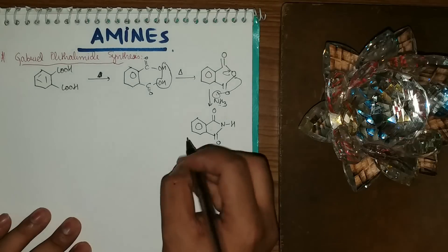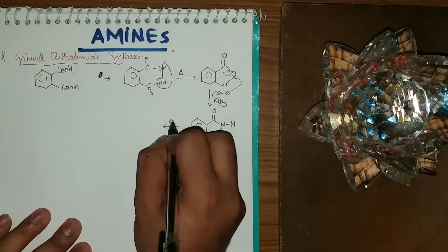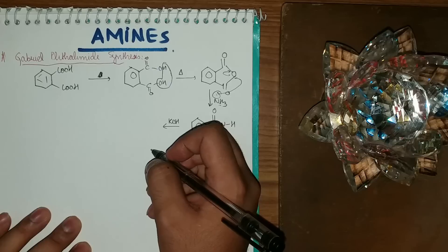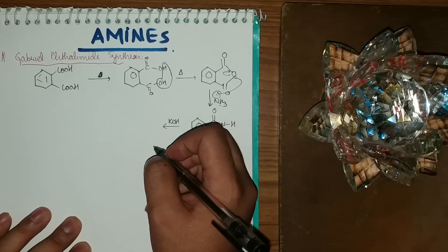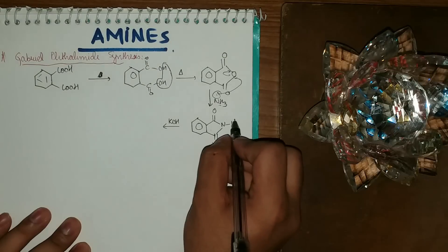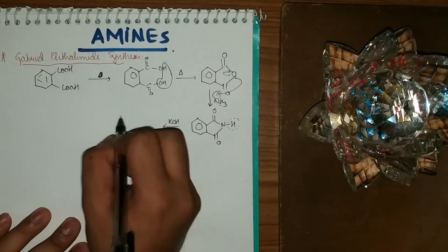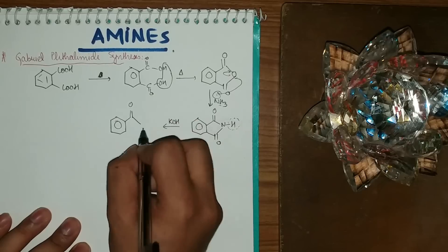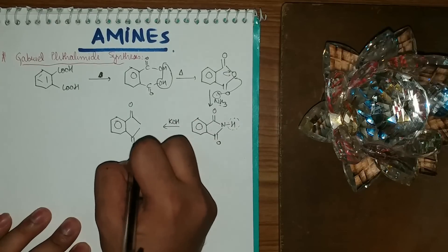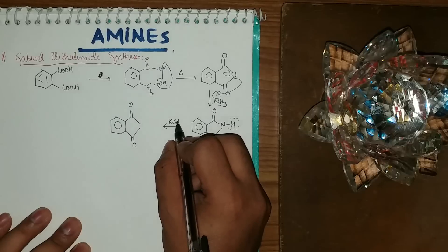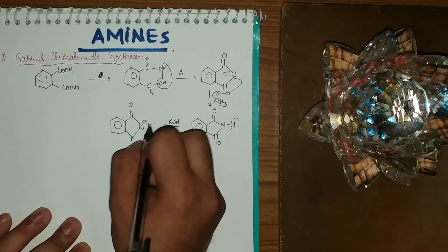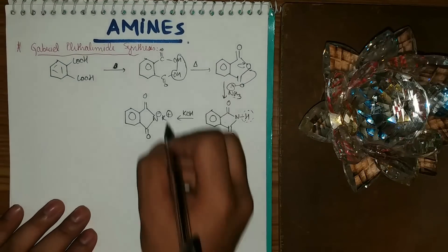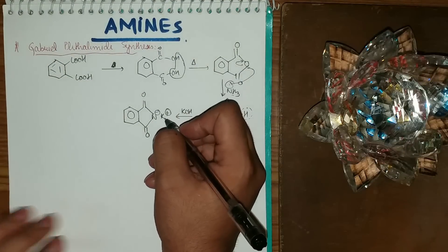Next, I react with KOH, which is a base. The base removes the most acidic hydrogen — the H on nitrogen. Acid plus base gives a salt: N⁻K⁺. This has now become a nucleophile that we can use in further reactions.